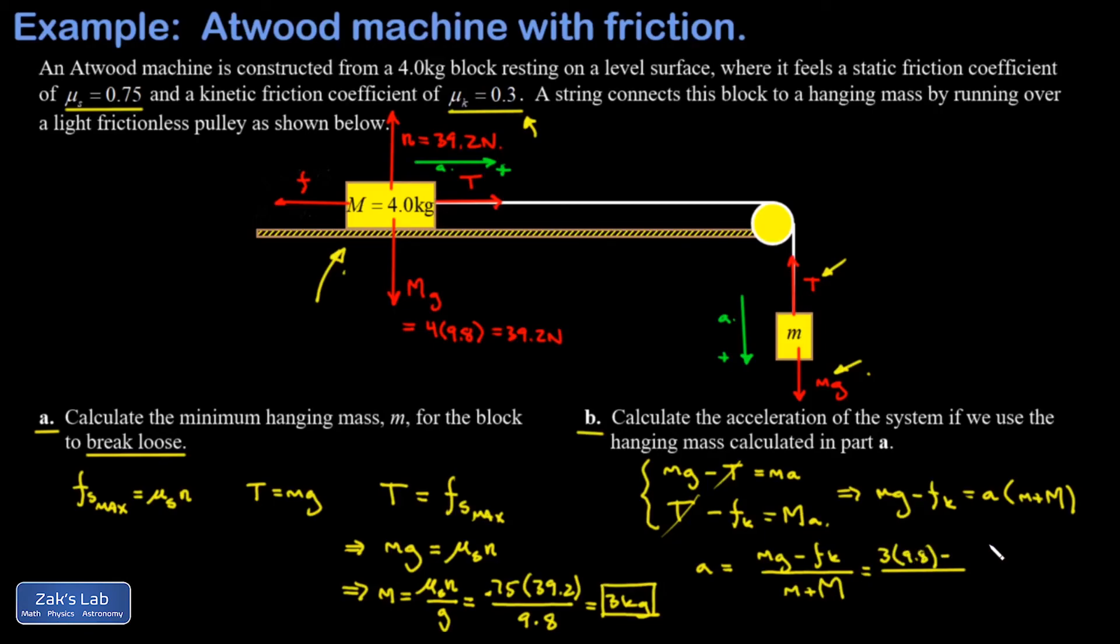Our force of kinetic friction is given by μk times the normal force. So that's 0.3 for μk, and the normal force again is 39.2 N. The sum of the two masses is 3 kg plus 4 kg, or 7 kg. And we get an acceleration of 2.52 m/s².